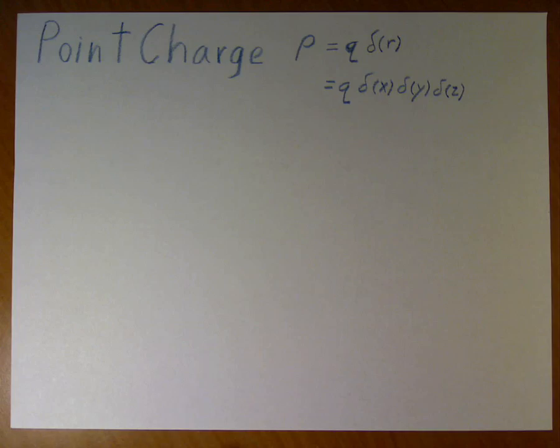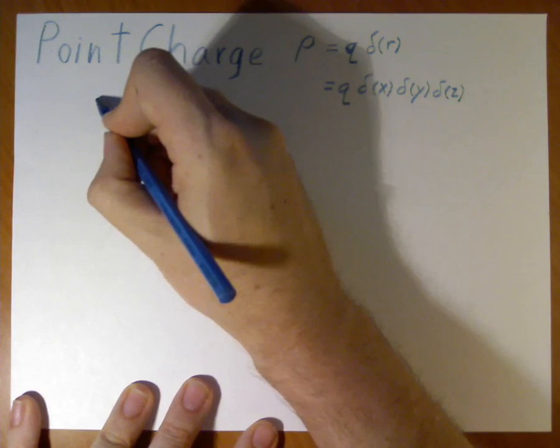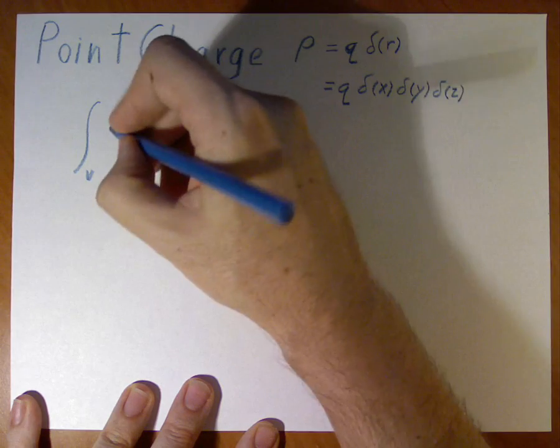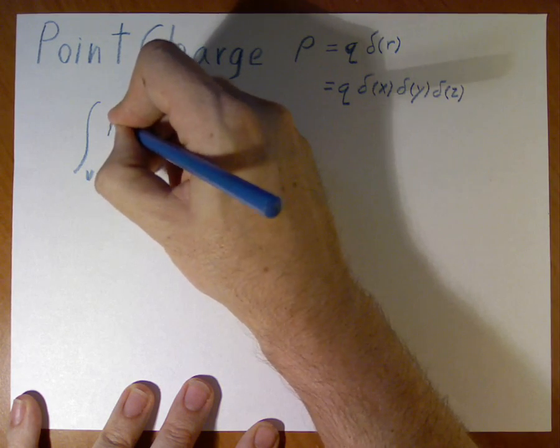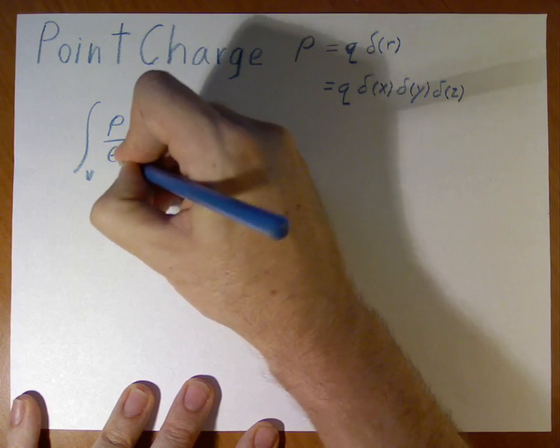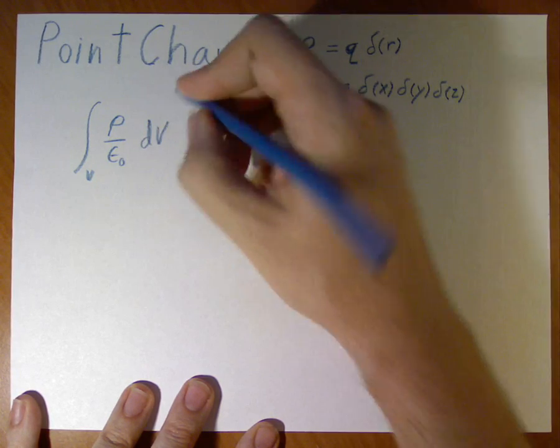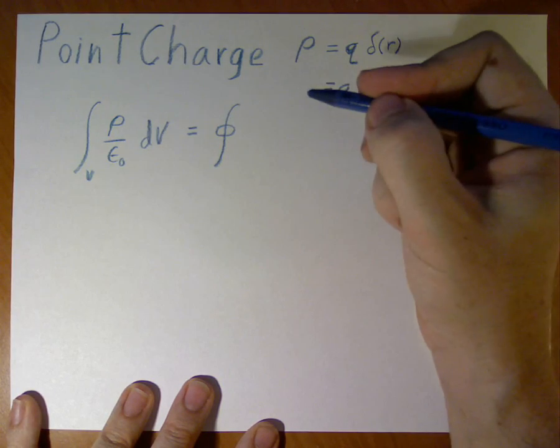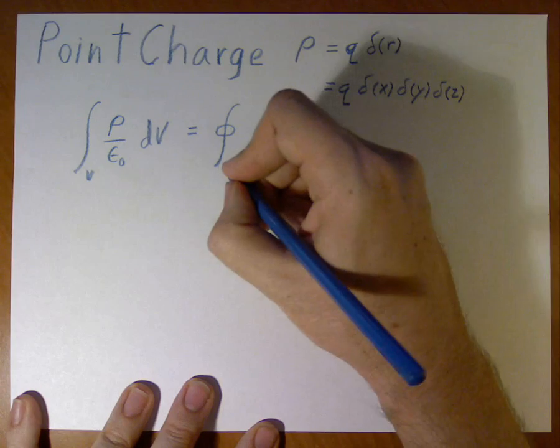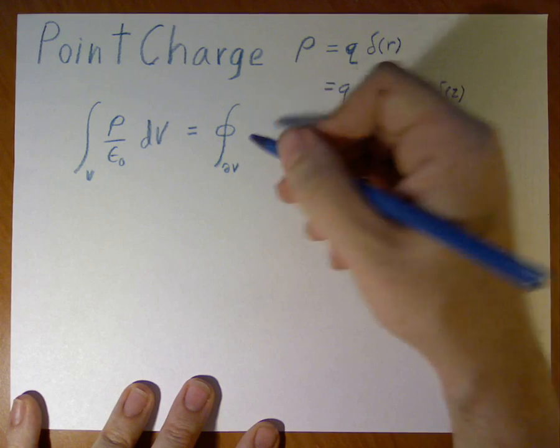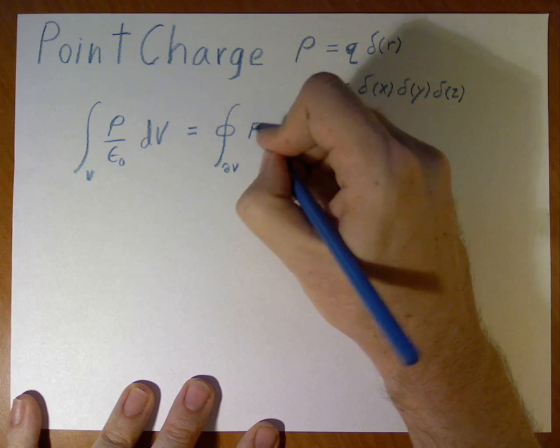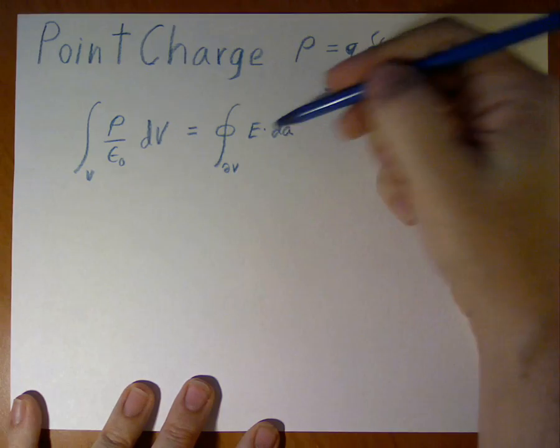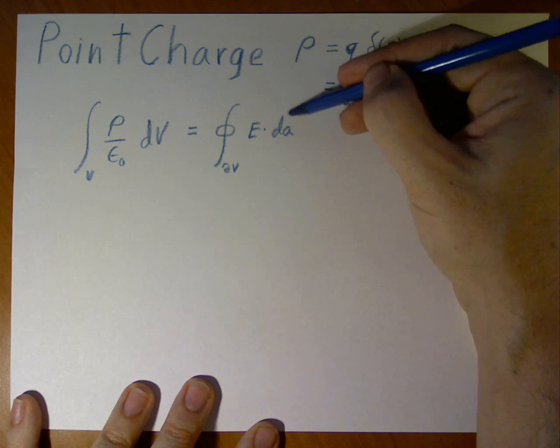To start, we write out Gauss's law, which says that the volume integral of a charge is equal to the surface integral. So that's an area integral over the surface of the Gaussian surface.